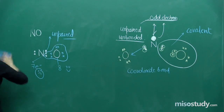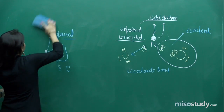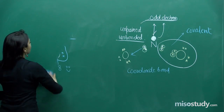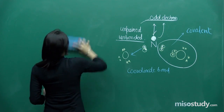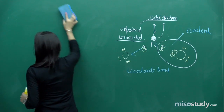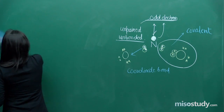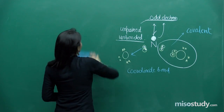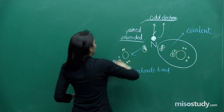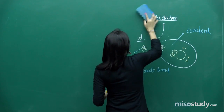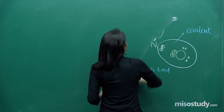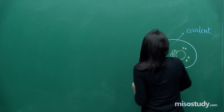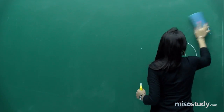Okay, I think you would have noted this much down. Now let's continue further. Before I start anything related to the drawbacks of Lewis dot structures further, let me see.